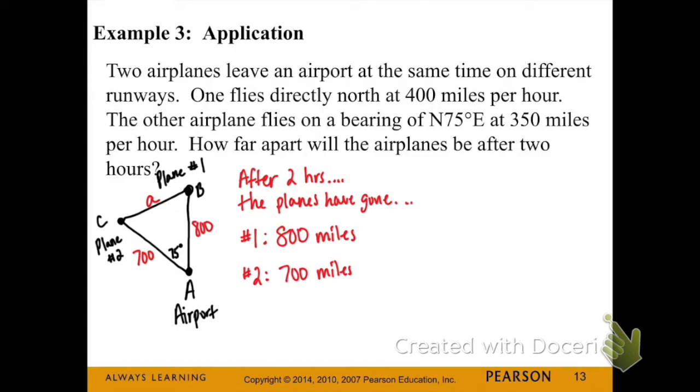Plane 1 went straight north, so that's why I drew it right above the airport. And then plane 2 went north 75 degrees east bearing, so I drew it off to the left and that makes an angle of 75 degrees for A.